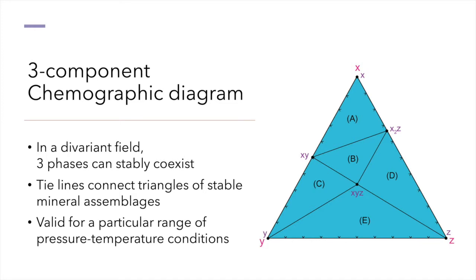Within a divariant field, we can view the stable mineral assemblages for a three-component system using a ternary chemographic diagram. A chemographic diagram for hypothetical components X, Y, Z shows possible stable assemblages among the hypothetical phases X, Y, Z, XY, X2Z, and XYZ.